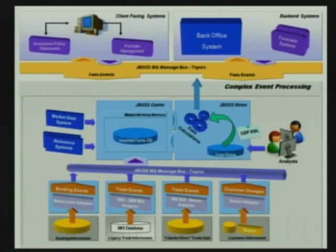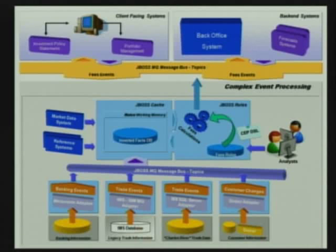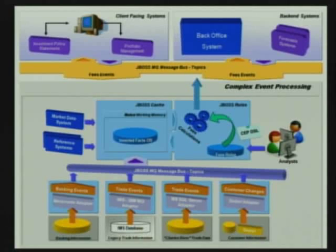This is where the heart of CEP processing actually takes place. In order to accomplish CEP you need two things: you need an inverted fact database, and you need some kind of an inference engine that's able to take these events and aggregate them in an intelligent manner, or drop some events. The aggregated complex event is then propagated out through messaging infrastructure to GMS, back-end systems, forecast systems, back-office systems, and to portfolio management and investment policy statement client-facing systems.